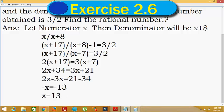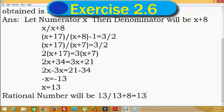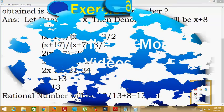So the numerator of the rational number is 13. The rational number will be 13 divided by 13 plus 8, which equals 13 divided by 21. So the answer is 13/21. Thank you and subscribe for more videos.